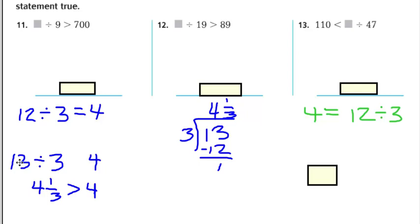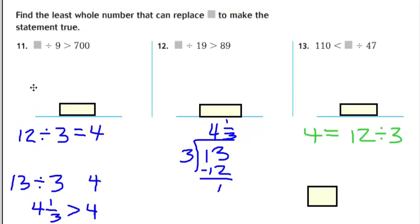So in other words, the next number up from this, if we just add 1 because that's what they want to know, what's the least whole number that can replace the box to make the statement true? Because we can't make this a decimal or a mixed number, it's got to be a whole number, and we wouldn't make this a 14 because 13 is a lower value than 14 and it still makes the statement true.